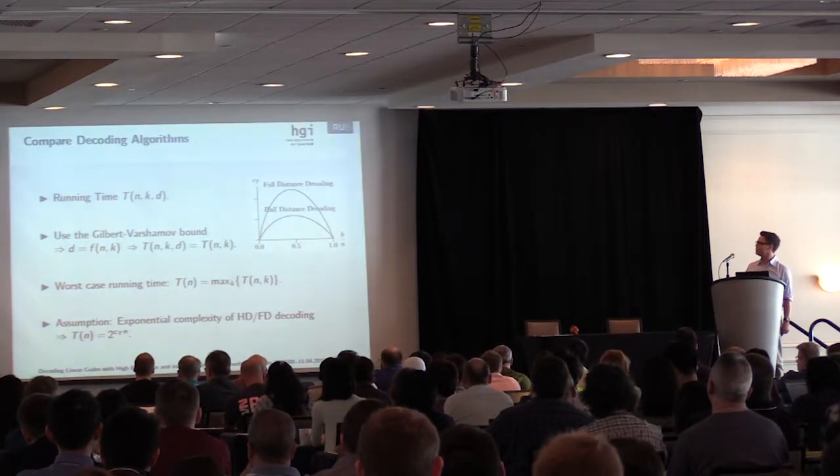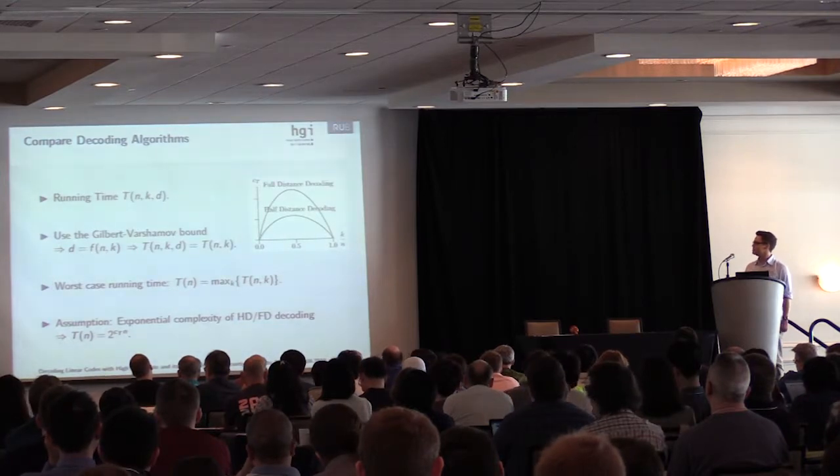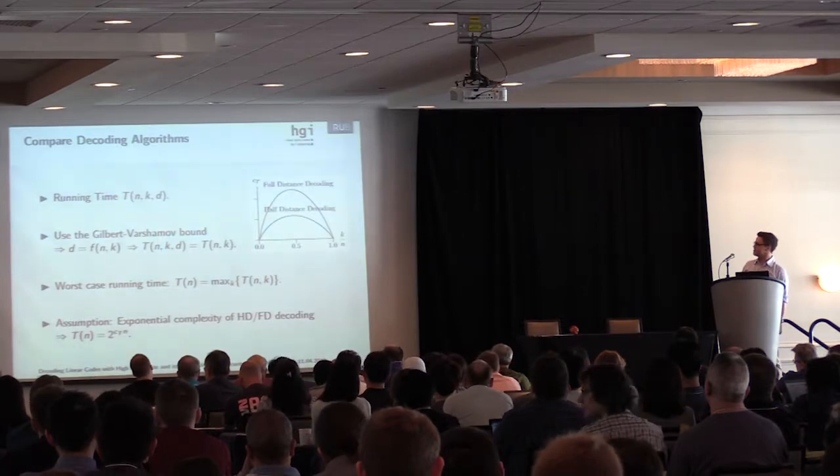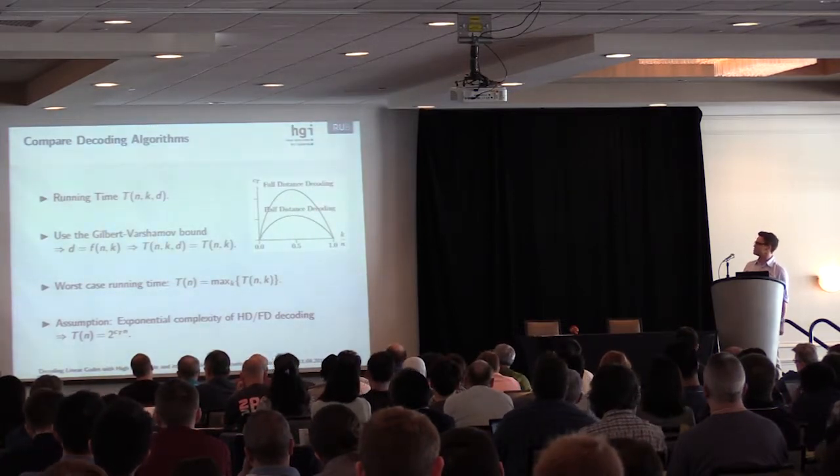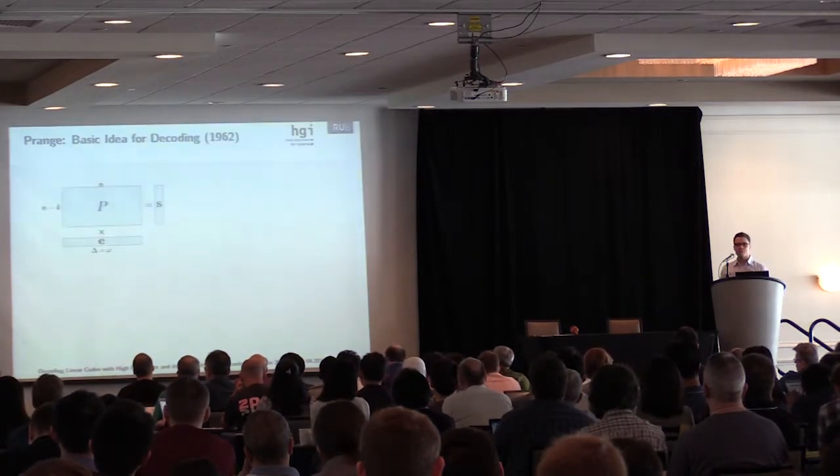In the upper right corner, you can also see some image which shows this running time exponent over the code rate k over n. As you can see, it makes total sense that we look at the worst-case running time, that we only look at the top point.